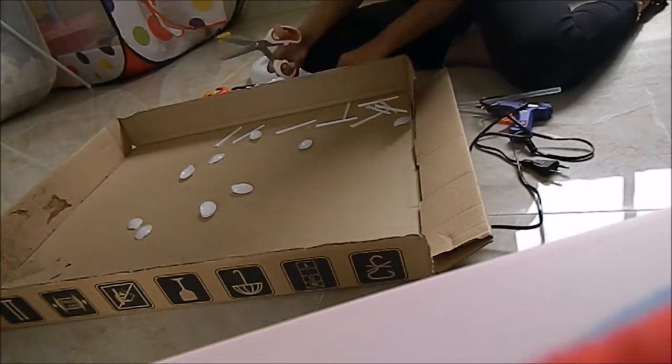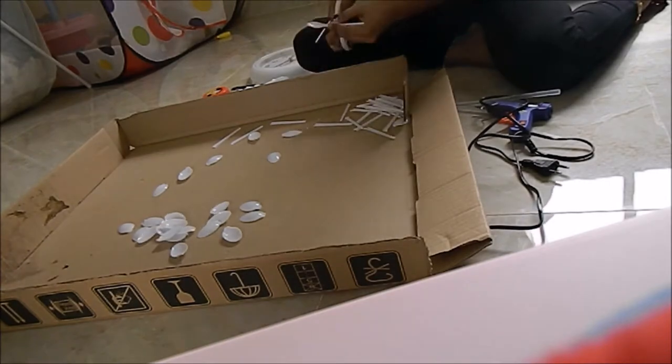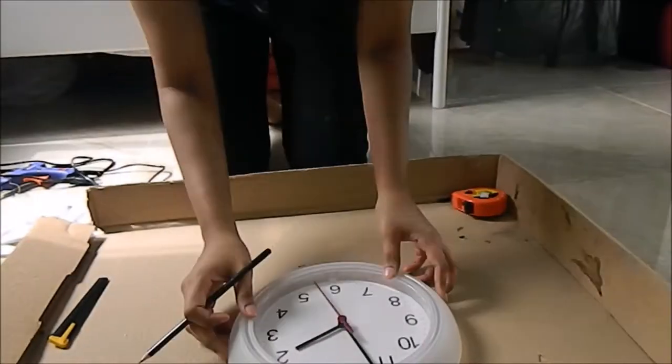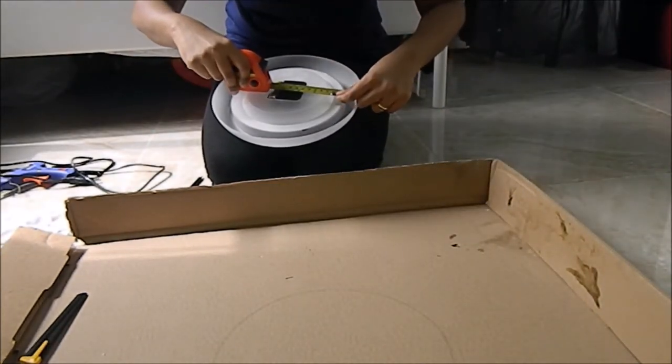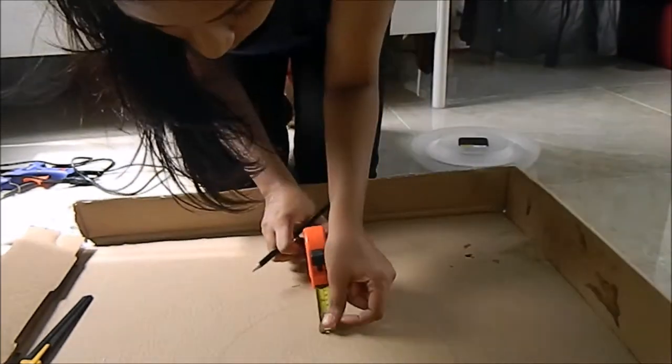First I cut out the tail of the spoons. I trace the outline of the clock, then I drew an inner circle and cut it out.